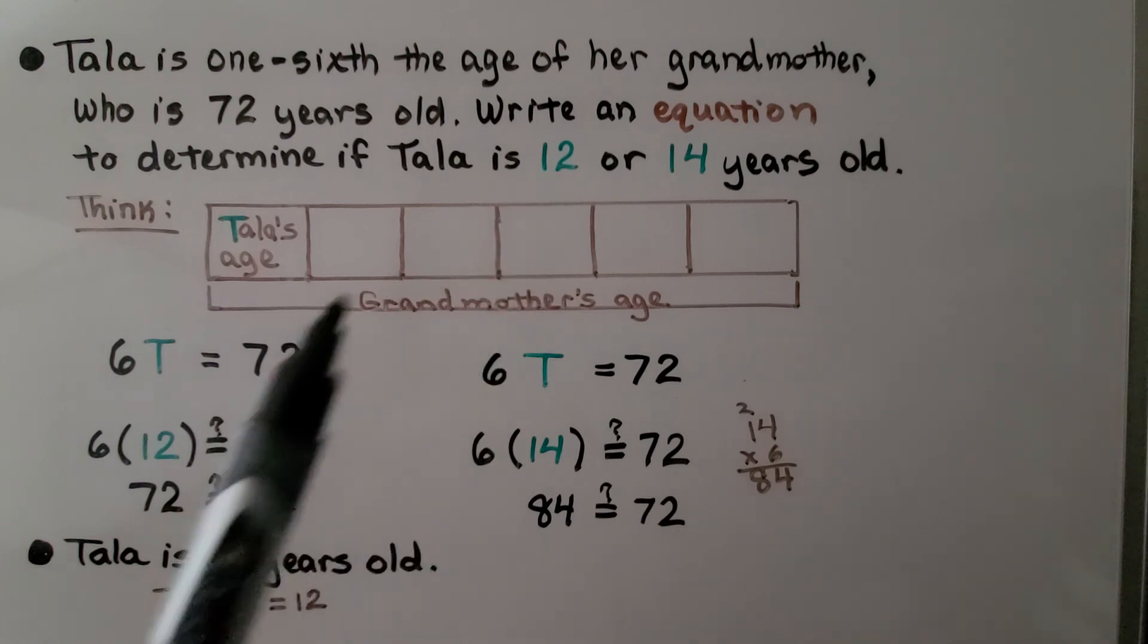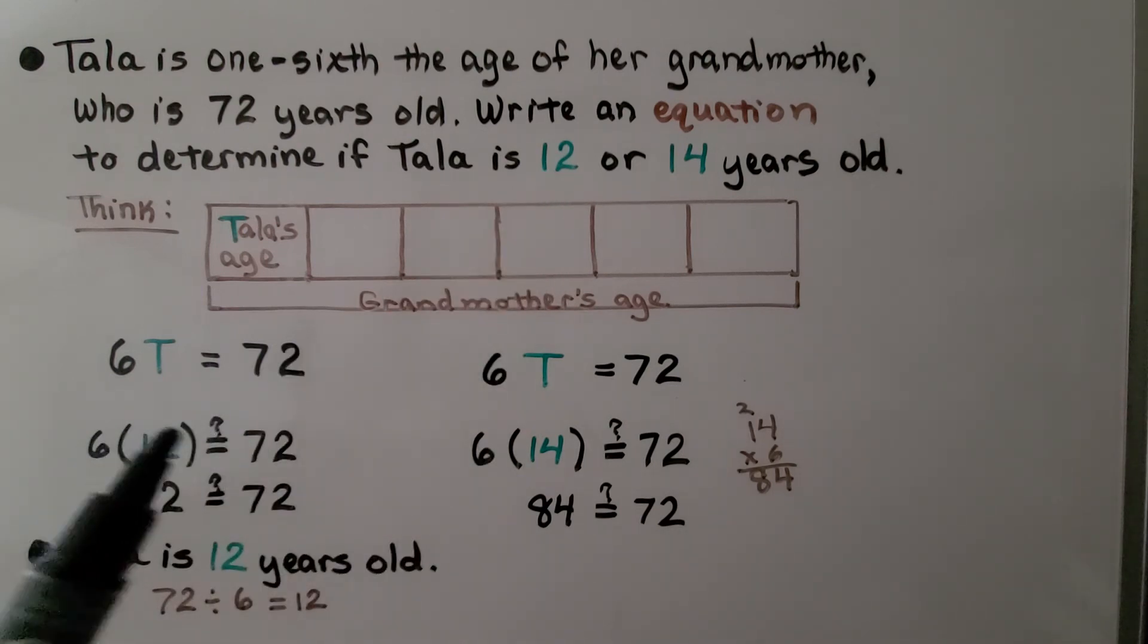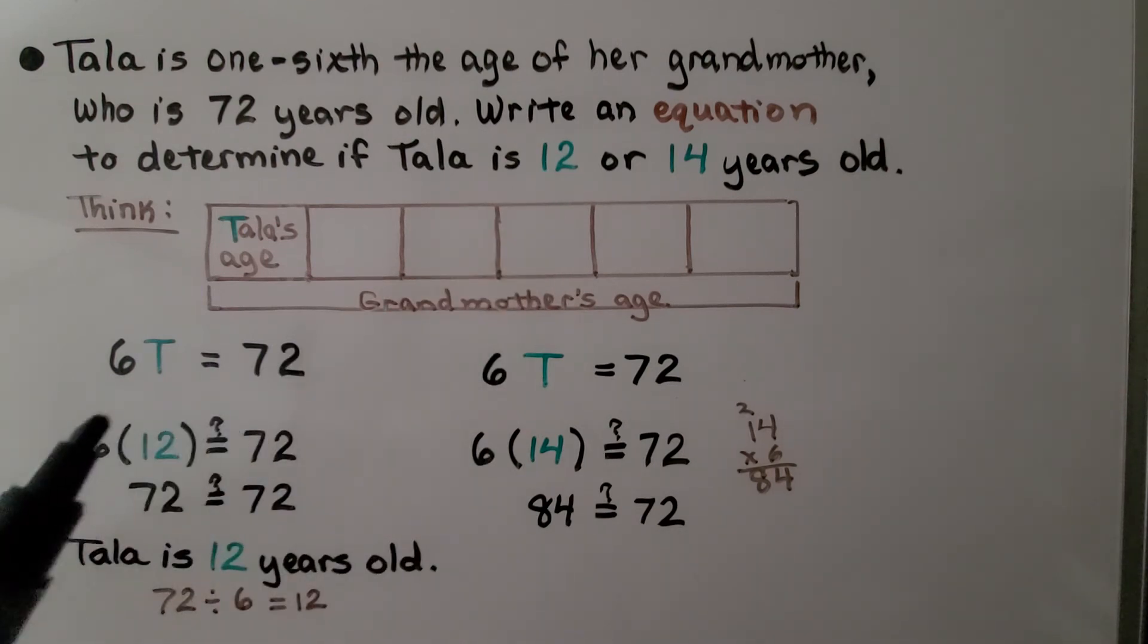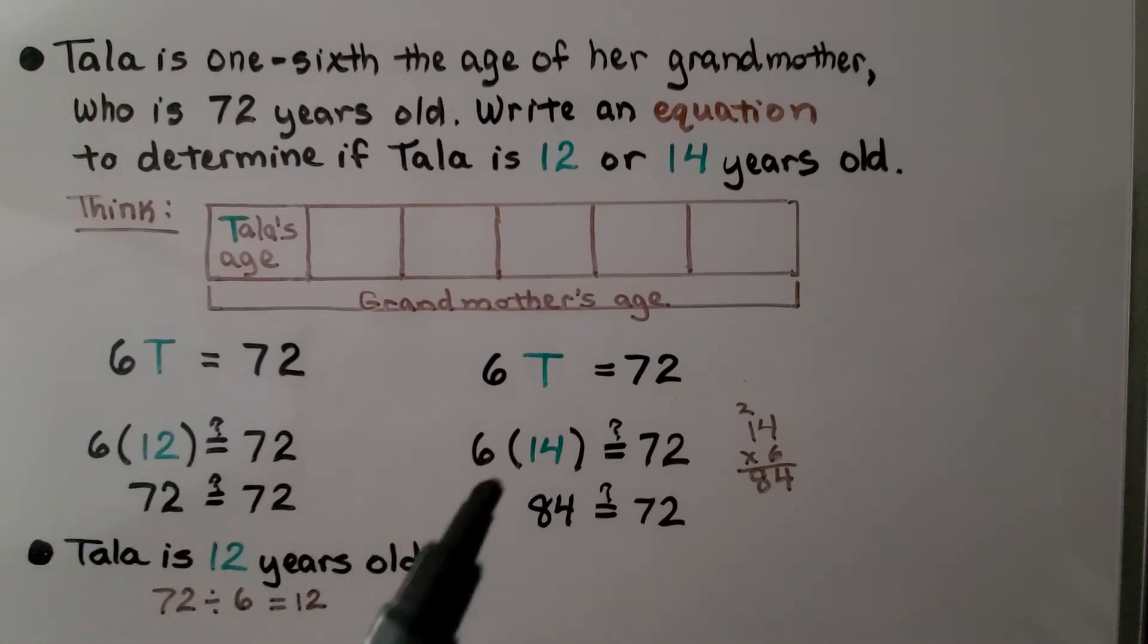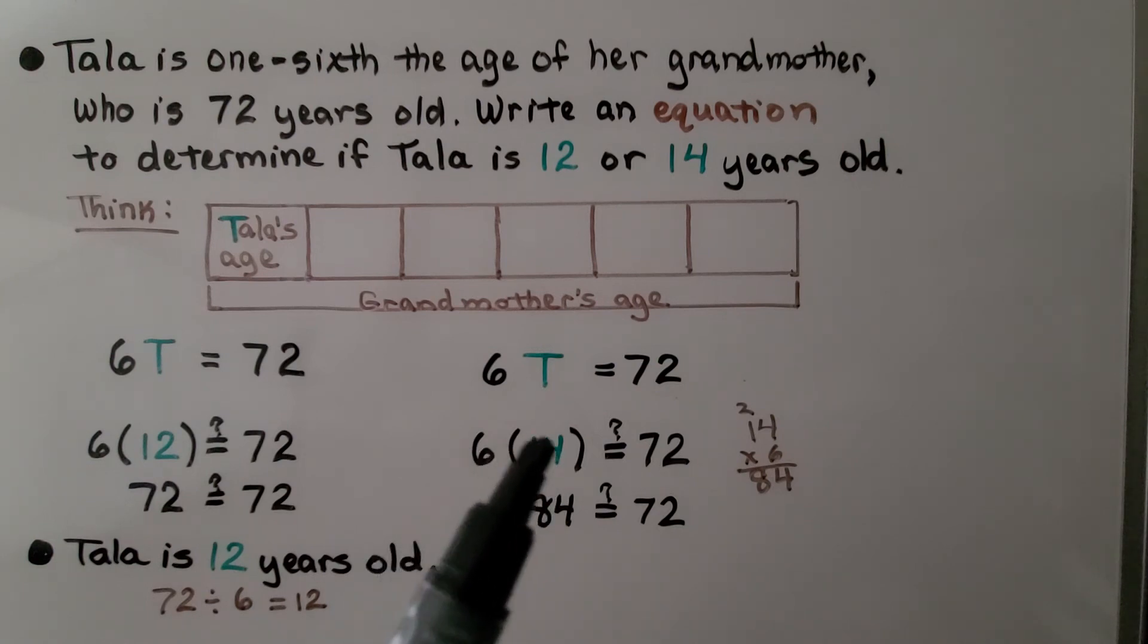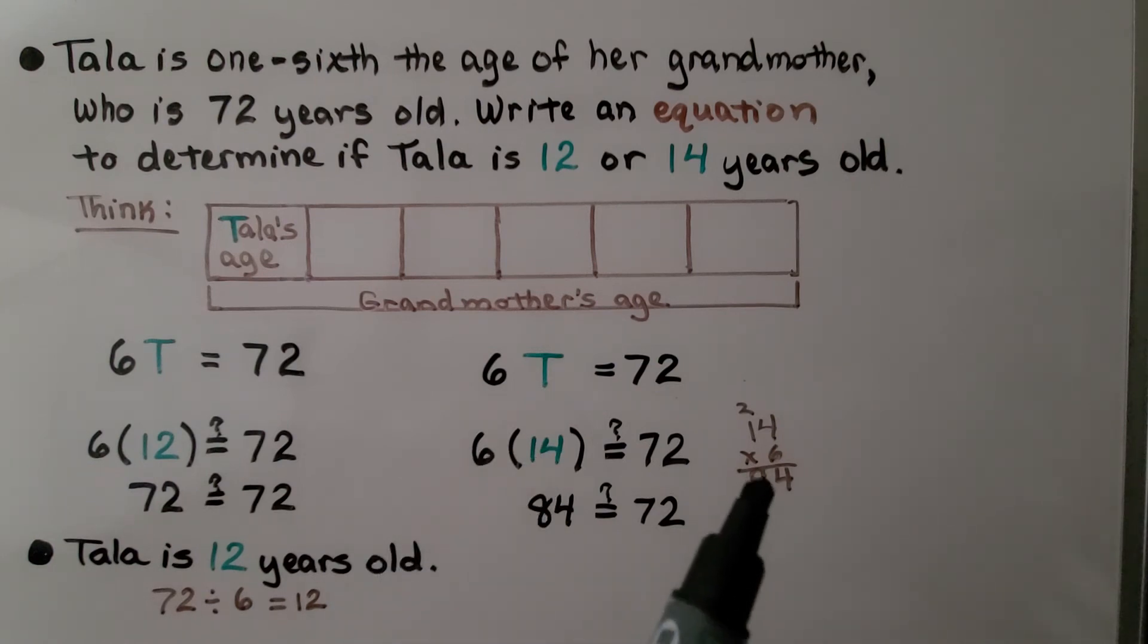We can substitute 12. Six times 12. Is that equal to 72? Well, six times 12 is 72. This is a true statement here. If we substitute 14, six times 14 is 84. So, this is a false statement. So, we know Tala is 12 years old. And we can double check. 72 divided by six is equal to 12.